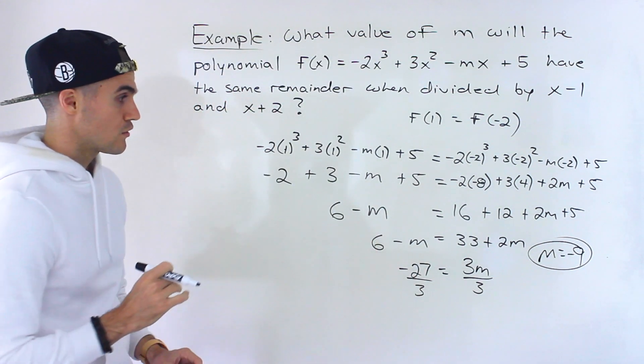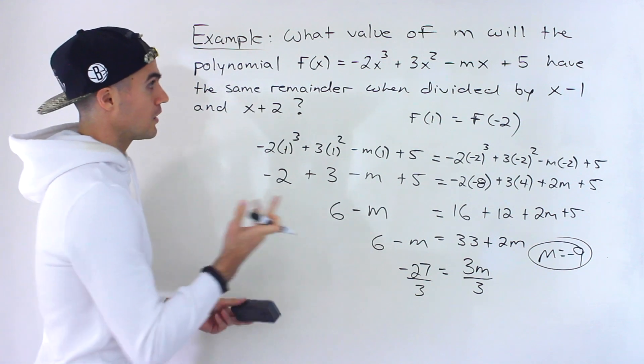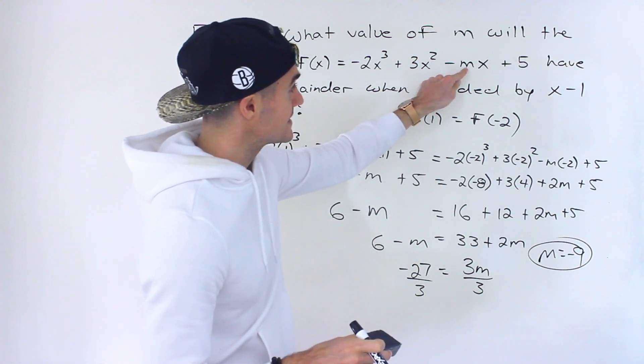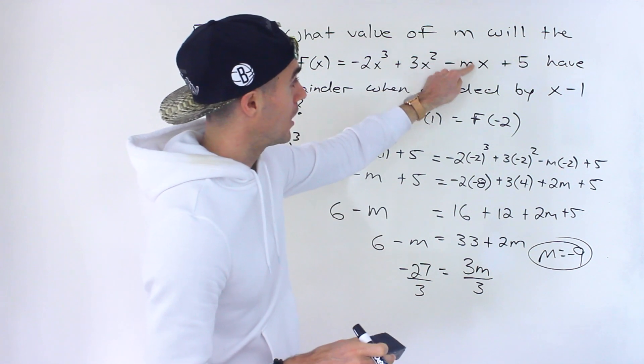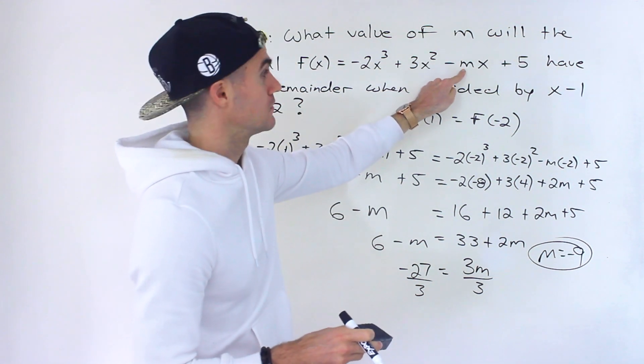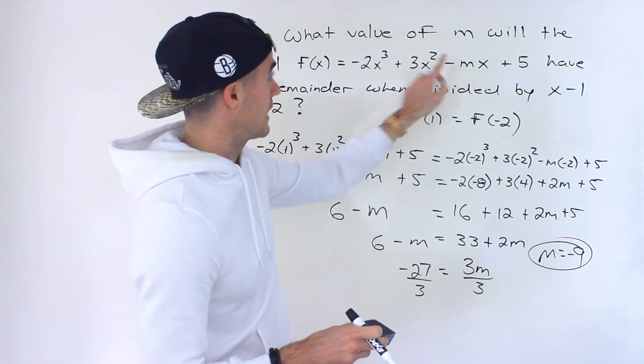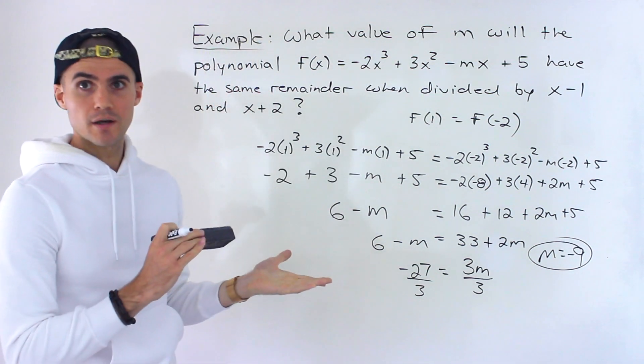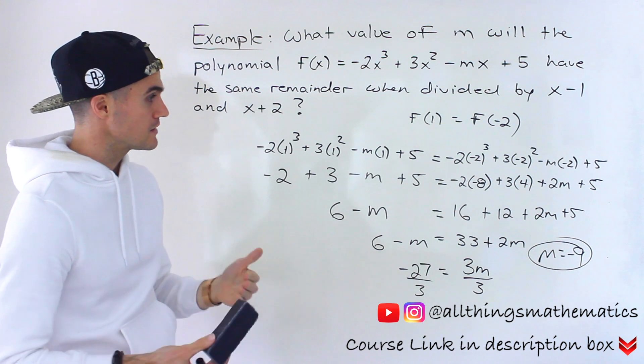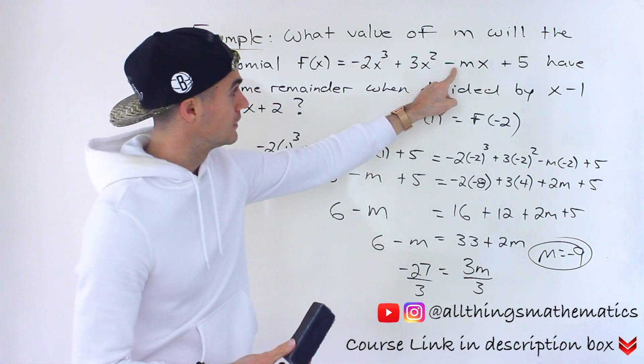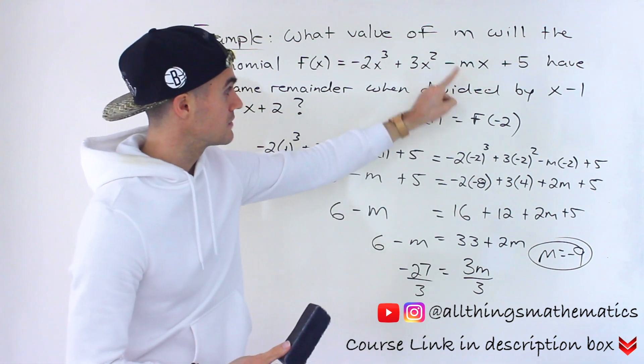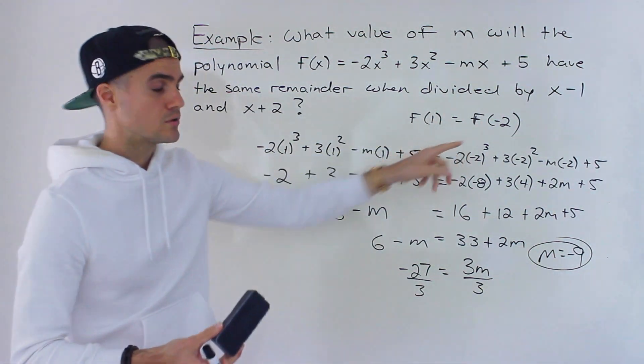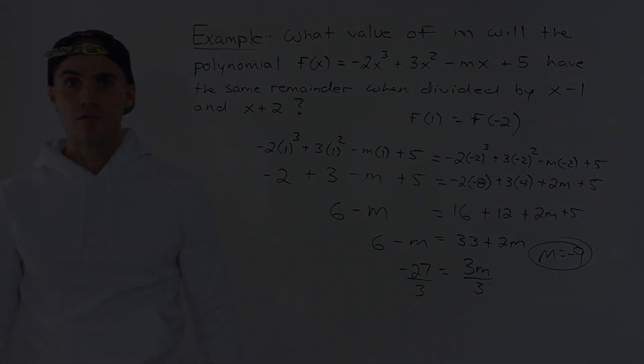So that ends up being the final answer. The polynomial m would be -9, so you'd have minus -9, so this would end up being positive 9x. That would be the polynomial. And if this comes up on a test and you have time to check your answer, you could check it. You could plug in, so you would have +9x, find out what is f(1), what is f(-2), and both of them should be the same. Thank you.